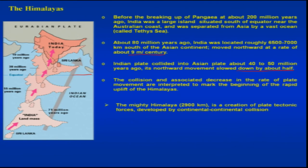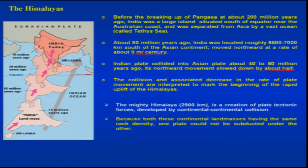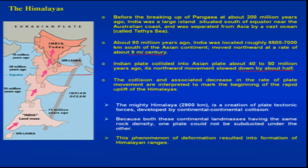The mighty Himalayas, covering around 2,900 kilometers east to west, are a direct creation of the continental collision between the Indian plate in the south and the Eurasian plate in the north. Because both continental land masses had almost the same rock density, one plate could not subduct under the other. This deformation resulted in the formation of the Himalayan ranges.